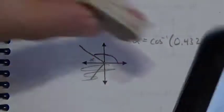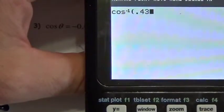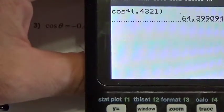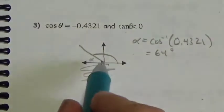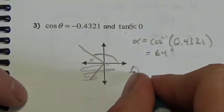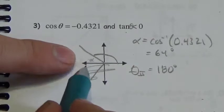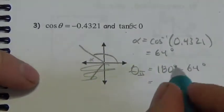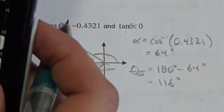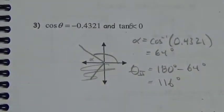The angle inside the triangle will be the inverse cosine of positive 0.4321. The inverse cosine of 0.4321 gives 64 degrees. Now I have to put 64 degrees in the second quadrant, so it's going to be 180 degrees minus that reference angle — minus 64 degrees — which gives 116 degrees. That's the answer we're looking for.